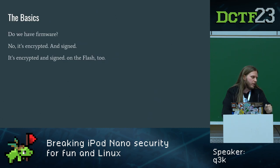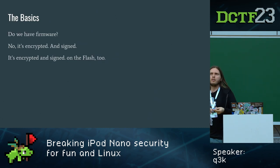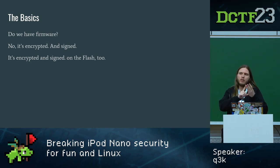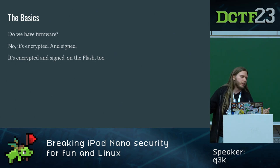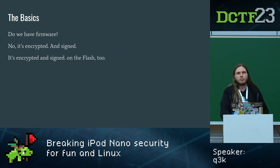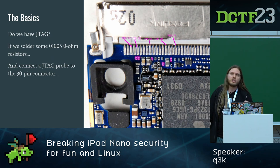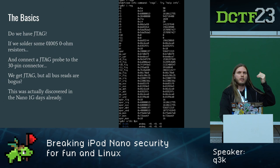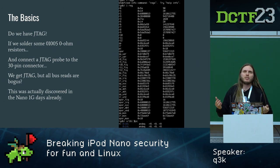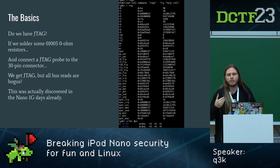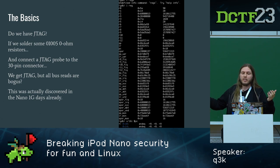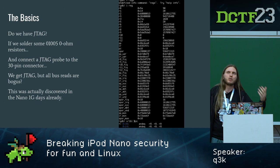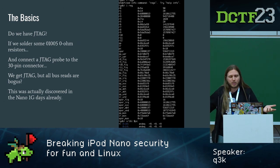How do we own the iPod Nano 5G? The basics: do we have the firmware? Yes, but it's encrypted and signed — both when downloading updates and when it's on flash. So we can't just copy the code, read it, and find a bug. Are there any debug interfaces? Yes — there is JTAG on board. You just have to solder in tiny SMD resistors jumped to zero ohms, then connect a JTAG probe to those test pins and attach to the running core. The only problem is, the moment you scan the JTAG chain, that core drops off the bus entirely — any reads return zeros, and the core happily continues executing garbage code. It's the weirdest JTAG lockout mechanism I've seen.